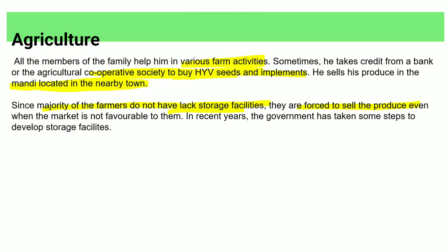The majority of farmers lack storage facilities and are forced to sell produce even when market conditions are not favorable. The government has taken steps to develop storage facilities such as ration shops, the PDS system, and buffer stock.